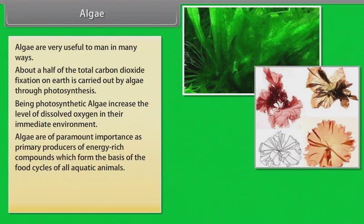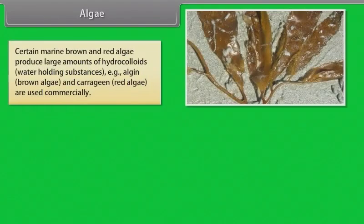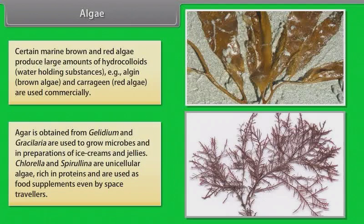Algae are of paramount importance as primary producers of energy rich compounds which form the basis of the food cycles of all aquatic animals. Among the seventy species of marine algae, many species of porphyra, laminaria and sargassum are used as food. Certain marine brown and red algae produce large amounts of hydrocolloids, water holding substances, that is algin from brown algae and carrageenan from red algae are used commercially. Agar is obtained from gelidium and gracilaria, are used to grow microbes and in preparations of ice creams and jellies. Chlorella and spirulina are unicellular algae rich in proteins and are used as food supplements even by space travelers.